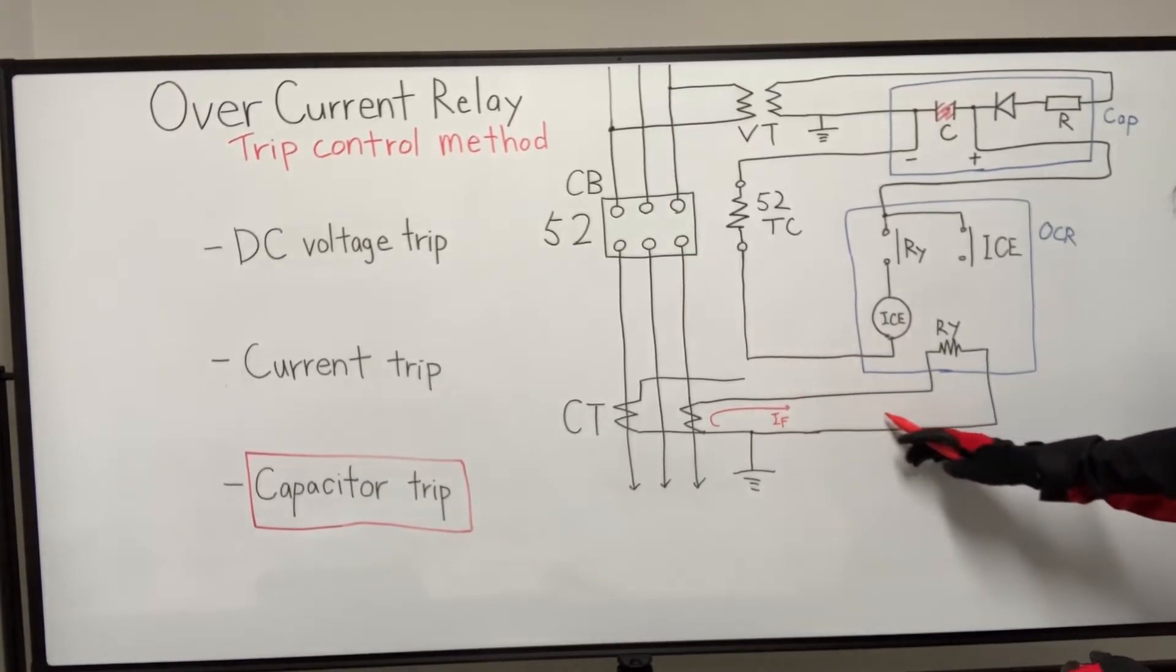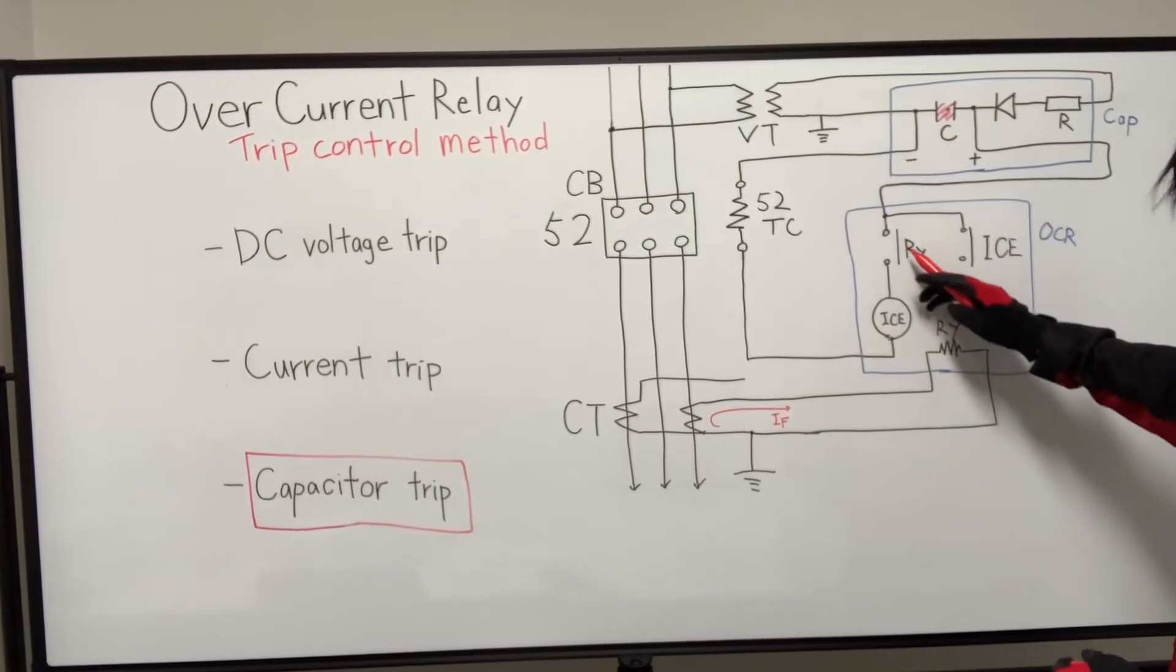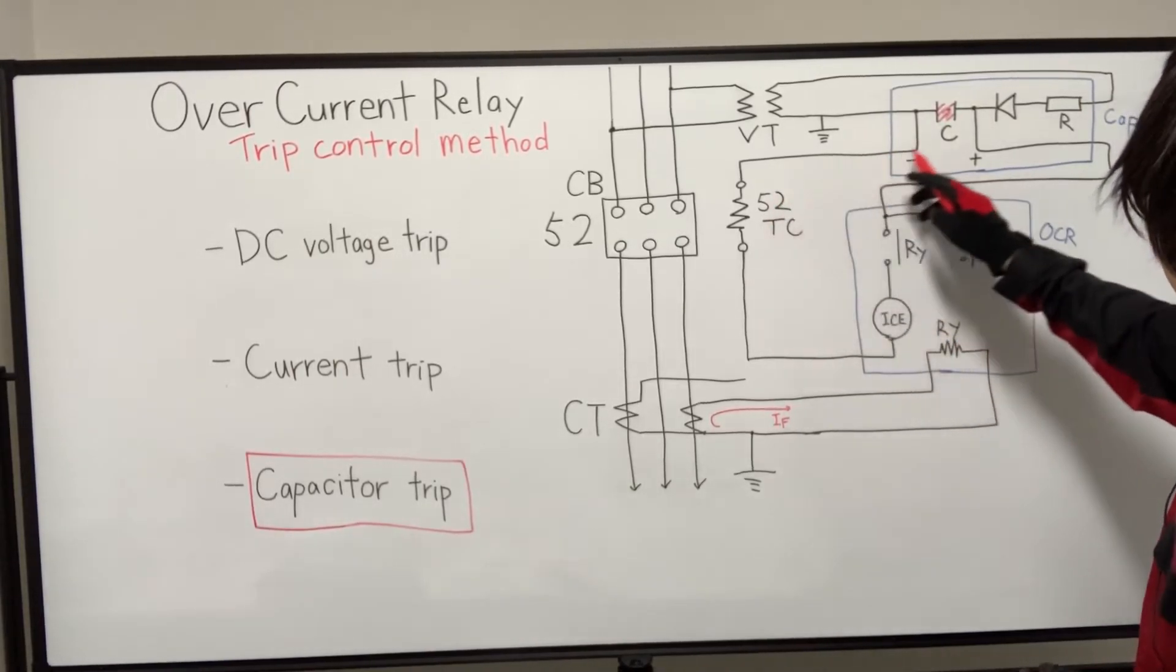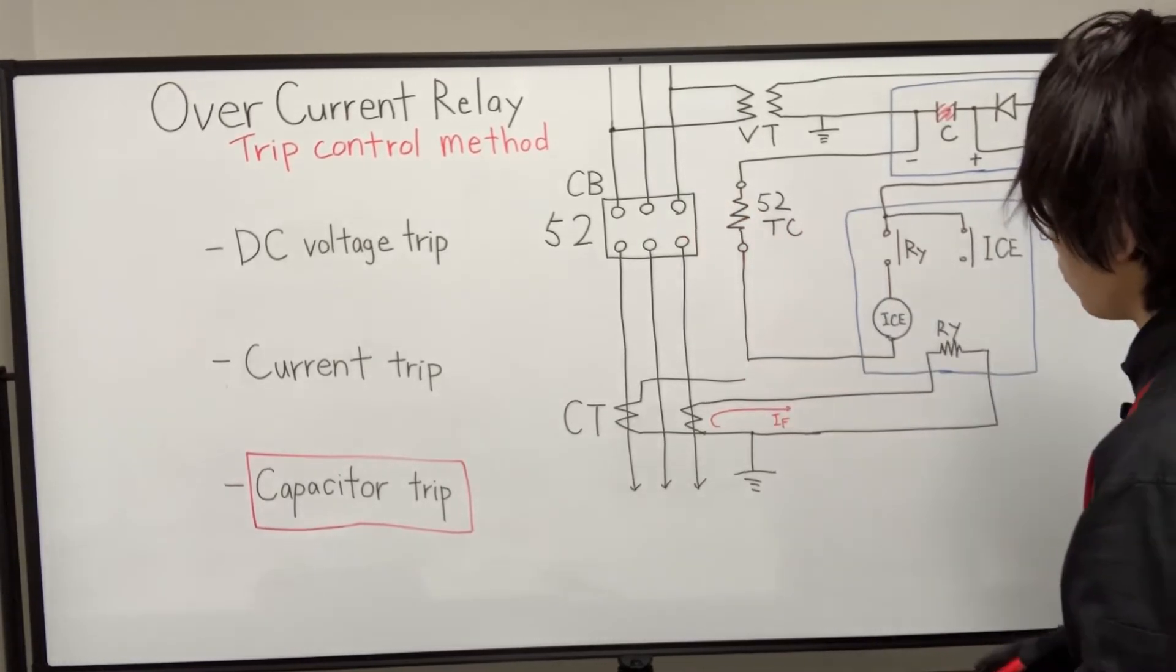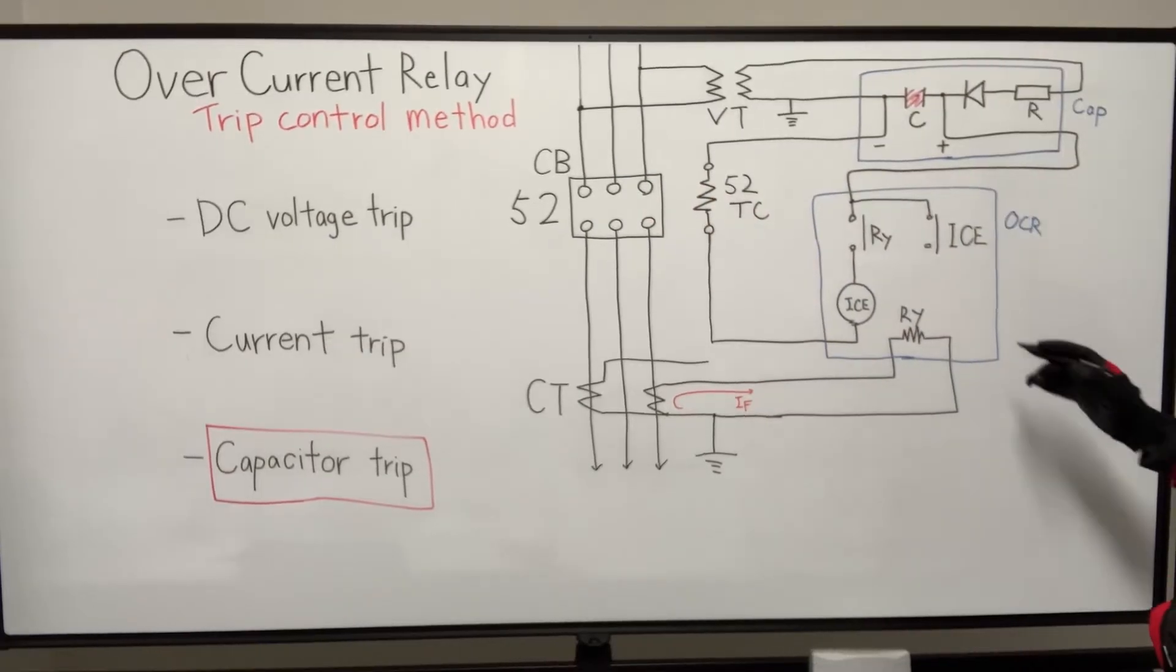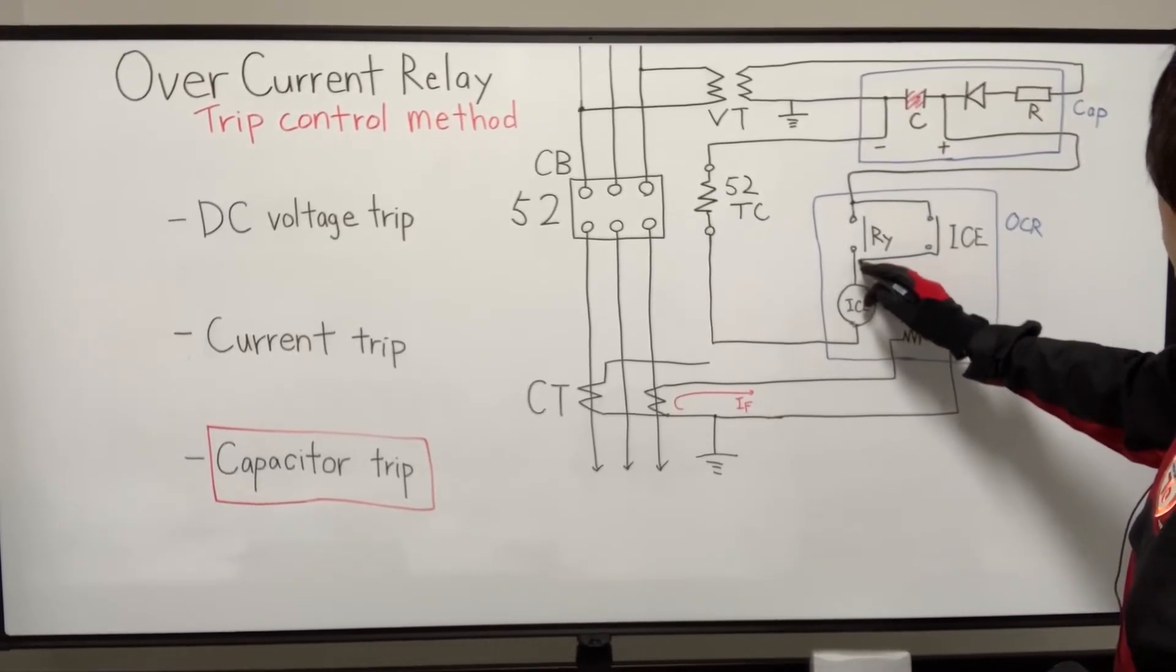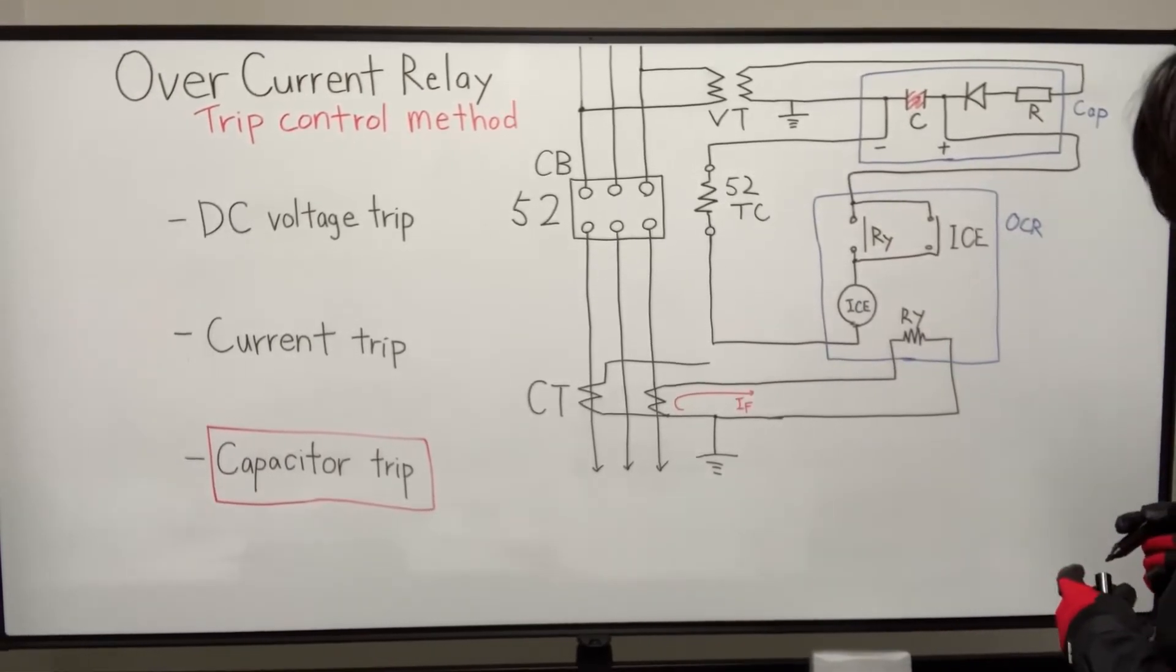If the fault current exceeds pickup value, relay is energized and contact time to close. And this made closed path. And this charge is flowing this trip coil. And circuit breaker will trip. Sorry, I forgot drawing this line. This is self-holding.